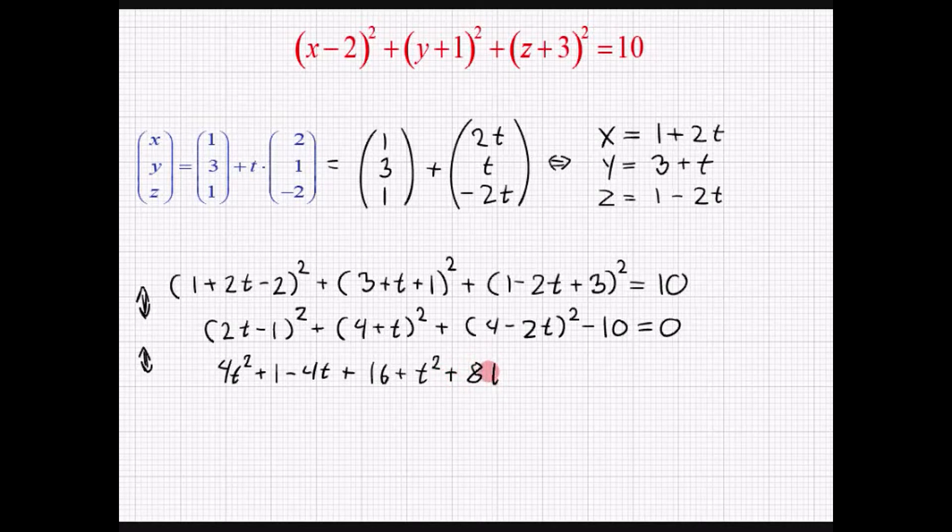Og endelig vores sidste parenthes. Så siger vi altså plus 16. Plus 4t i anden. Og minus det dobbelte produkt. Og vi husker at trække konstanten 10 fra.